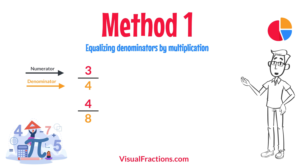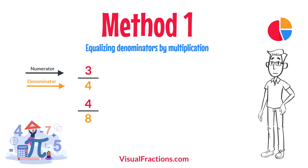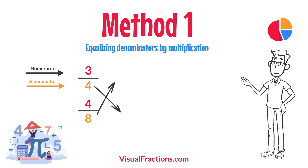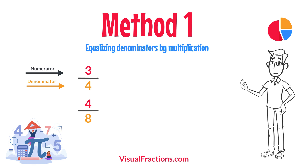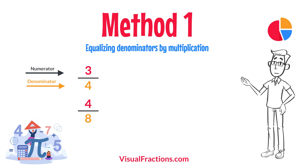First, let's equalize the denominators by multiplying each fraction's numerator and denominator by the other fraction's denominator. This method works by using the denominators of each fraction to create a common denominator, allowing us to compare the fractions directly.